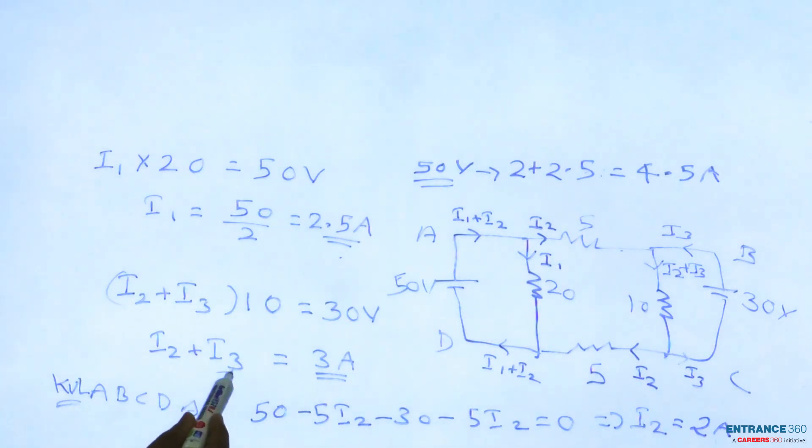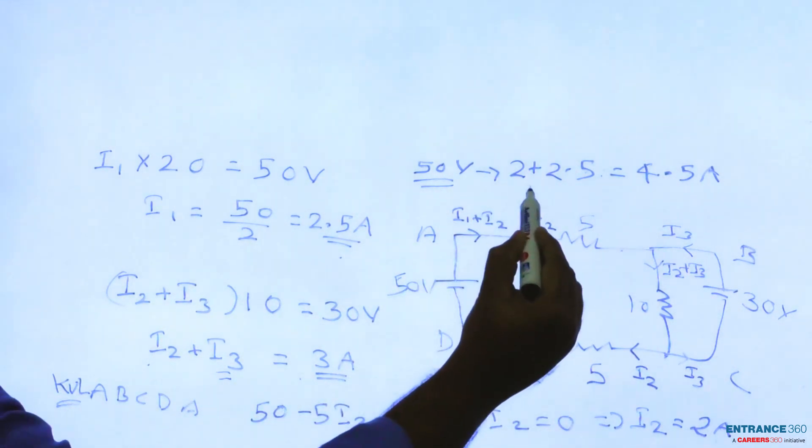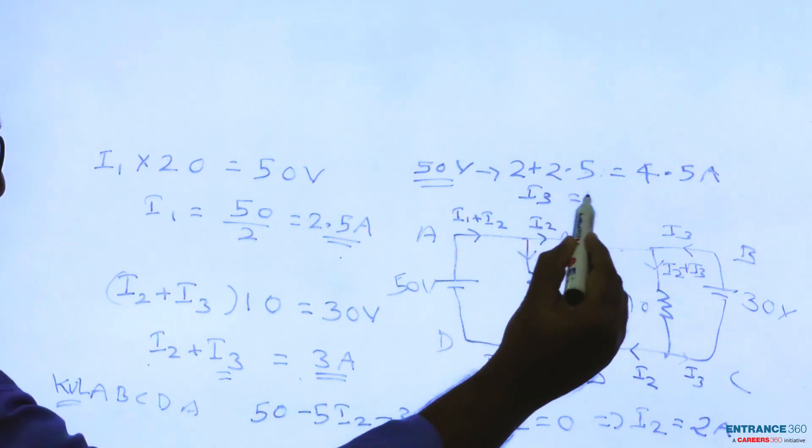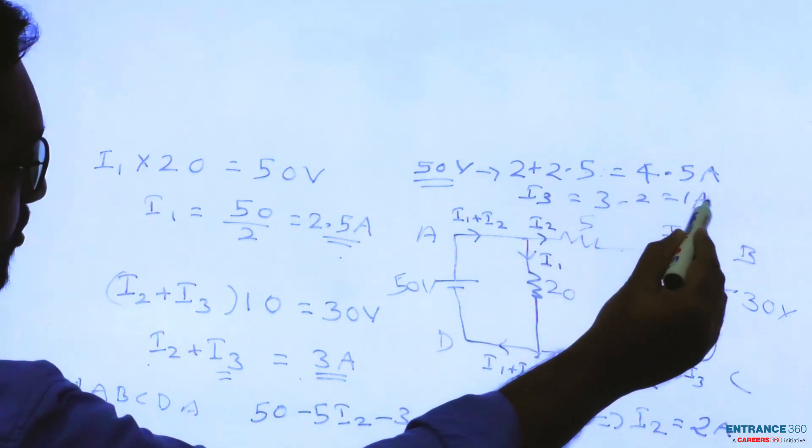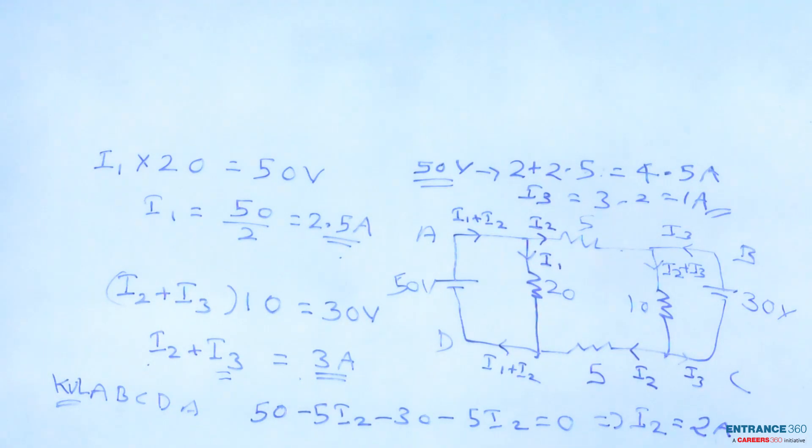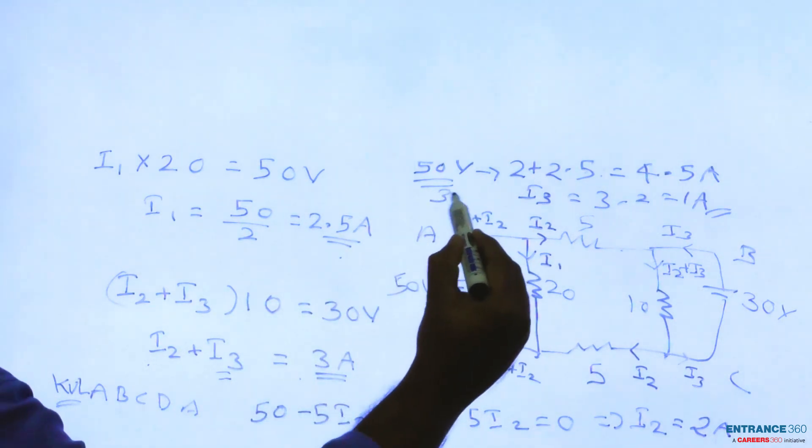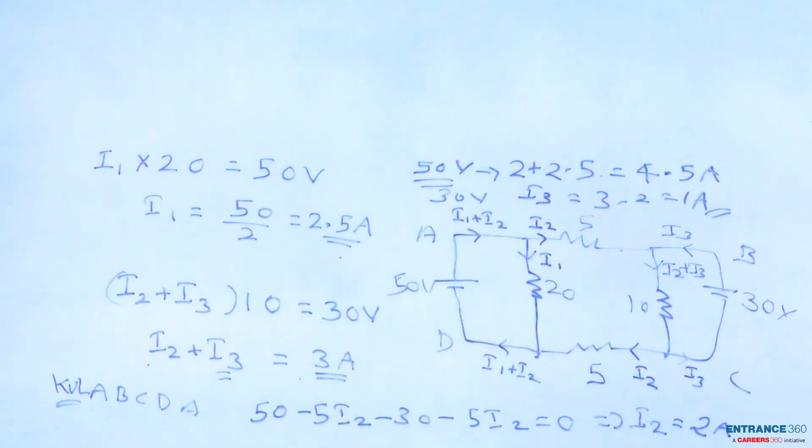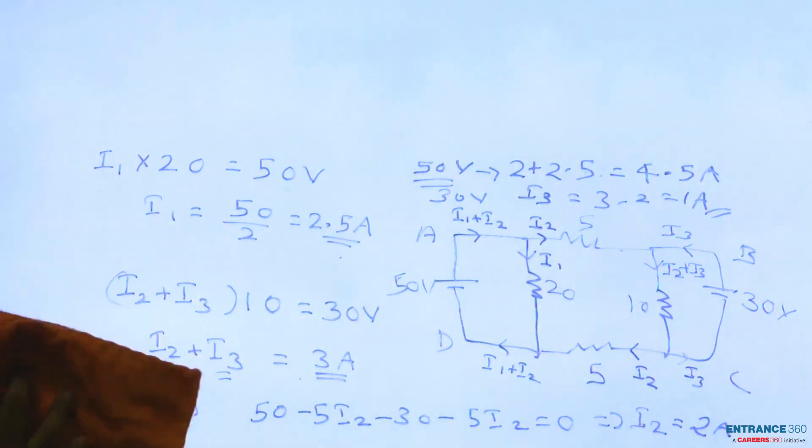And current through 30 volt will be I3. I3 will be 3 minus I2, where I2 is 2 ampere, so I3 equals 3 minus 2 equals 1 ampere. So current through 50 volt is 4.5 ampere and through 30 volt it is 1 ampere. That's our final answer.